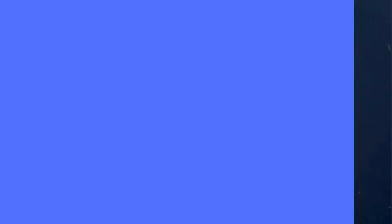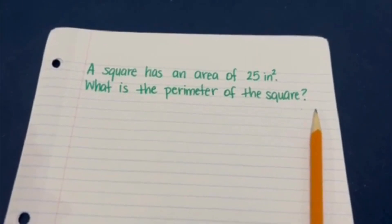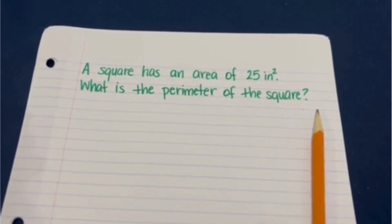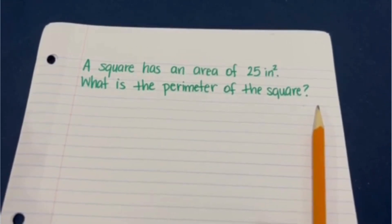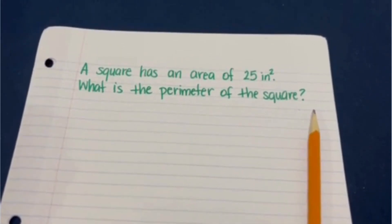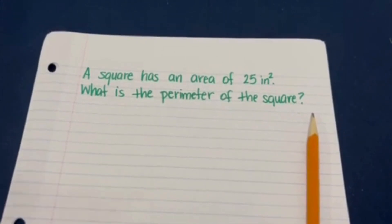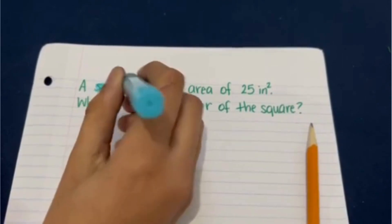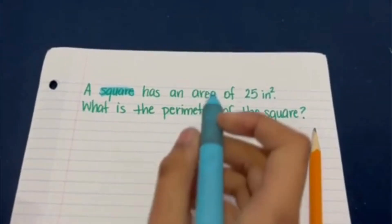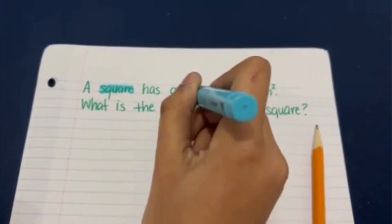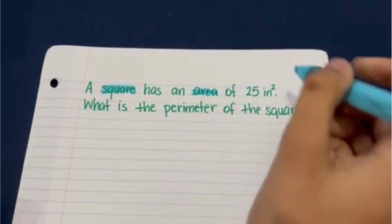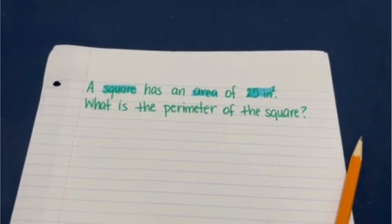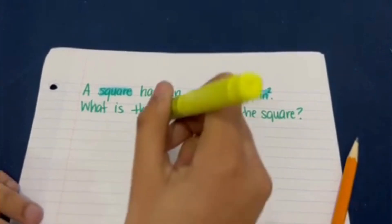Here's our first question: a square has an area of 25 inches squared — what is the perimeter of the square? Let's first highlight what we know. We know that we are dealing with a square, which is going to be very important in finding the perimeter. We also know the area, which is 25 inches squared, and what we need to find is the perimeter.